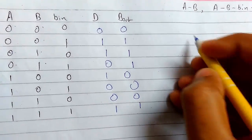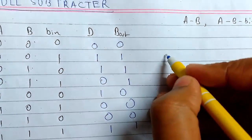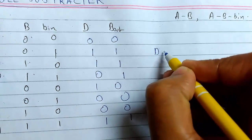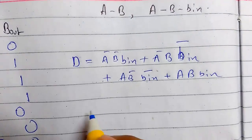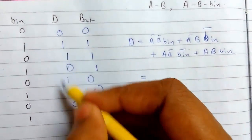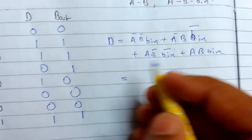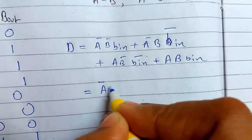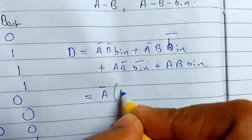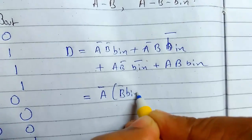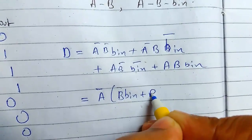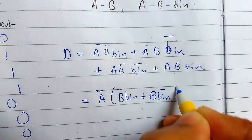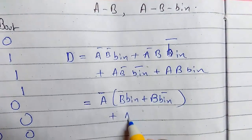Now I will write the difference expression for it. The difference D is—I have written all the expressions from here, the expressions corresponding to 1. Now I will simplify this. I will take A bar common. This will be B bar Bin plus B Bin bar. Now taking A common.